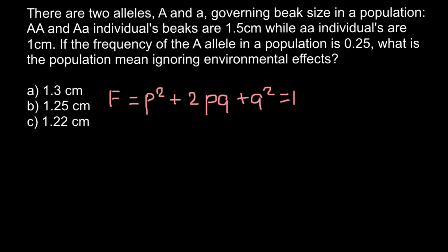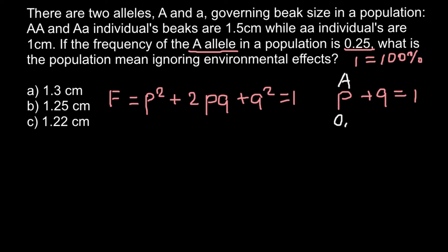We have two alleles, P and Q, and when we add these alleles together we get 1, which equals 100%. We are given the frequency of the dominant allele, which is 0.25. In our formula, P stands for the dominant allele — capital A — and we know its frequency is 0.25. We can easily find the frequency of Q, the small a allele, which is 0.75, because these two numbers add up to 1.